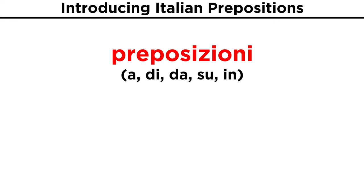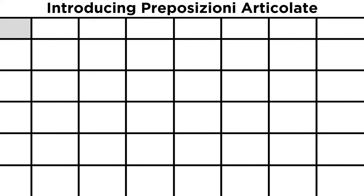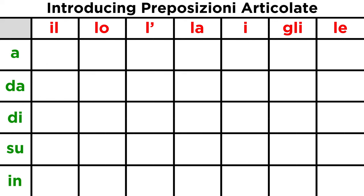These are all examples of prepositions being used without articles. But Italian uses articles so often these prepositions can also combine and contract with the article to form preposizioni articolate. These forms will need to be memorized. On the top, we place the articles: il, lo, l', la, i, gli, and le. On the left, we place the prepositions: a, da, di, su, and in.